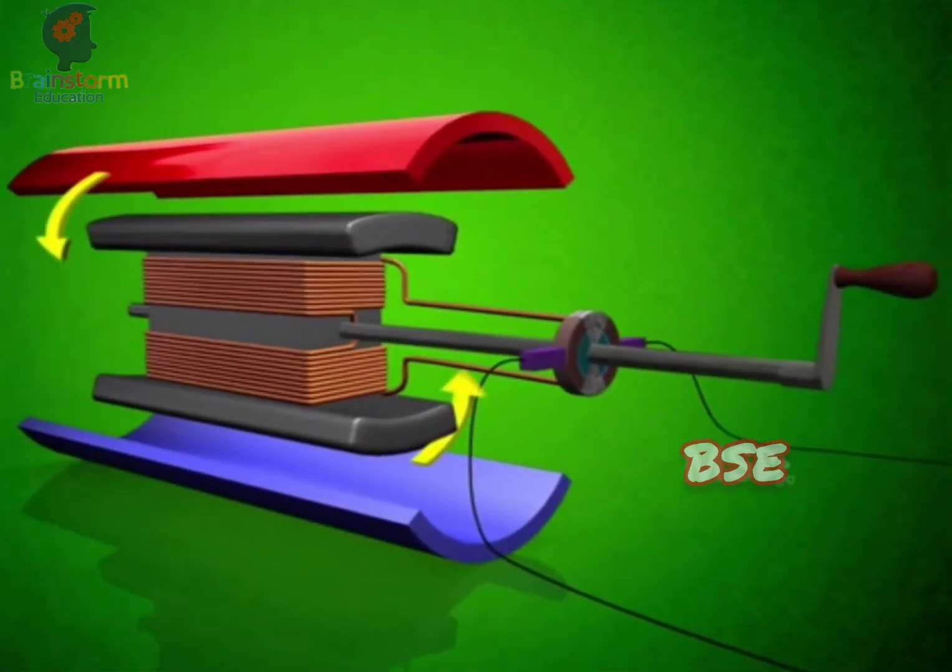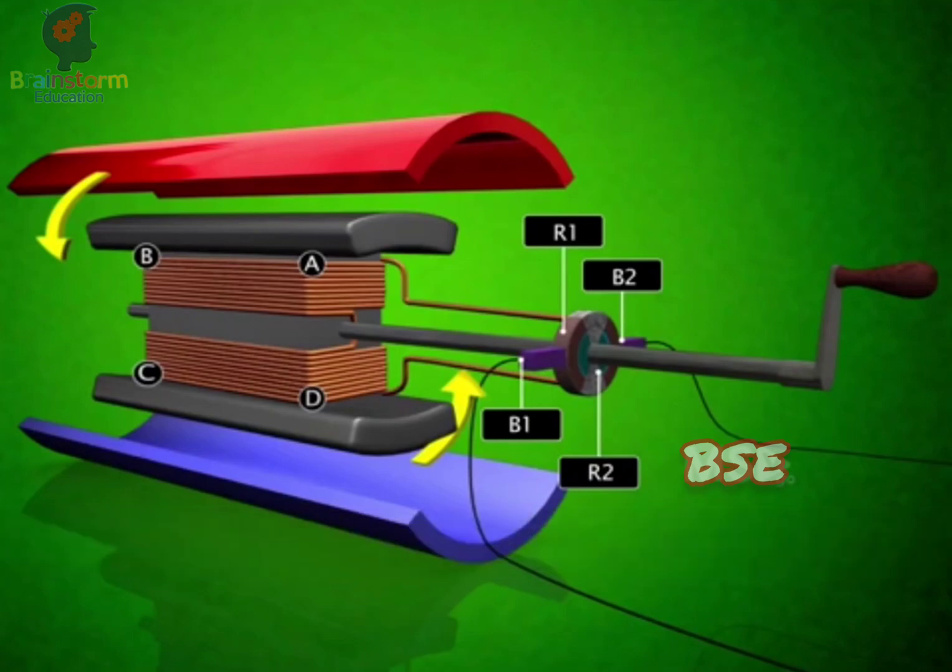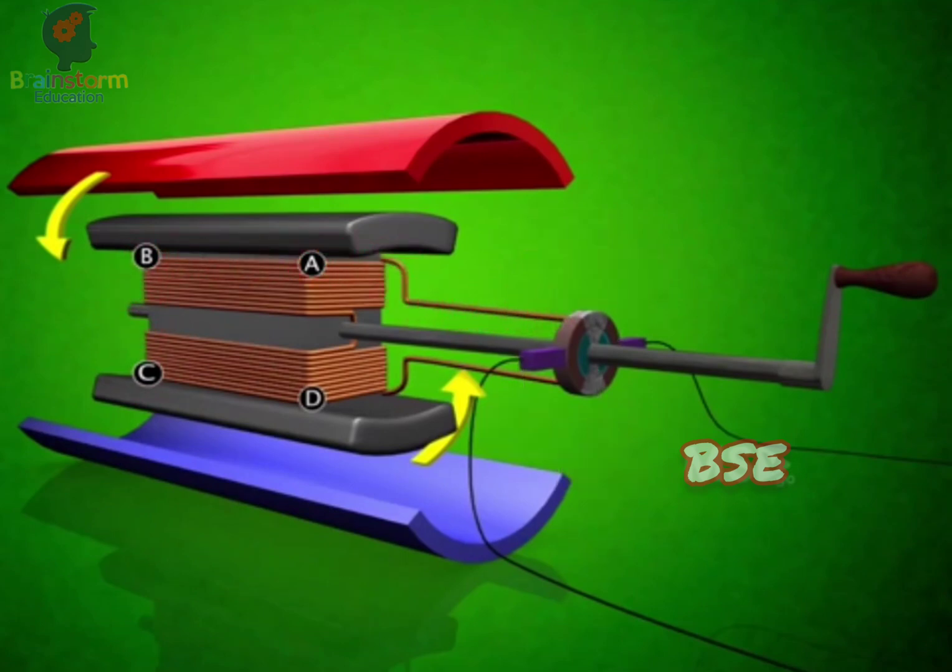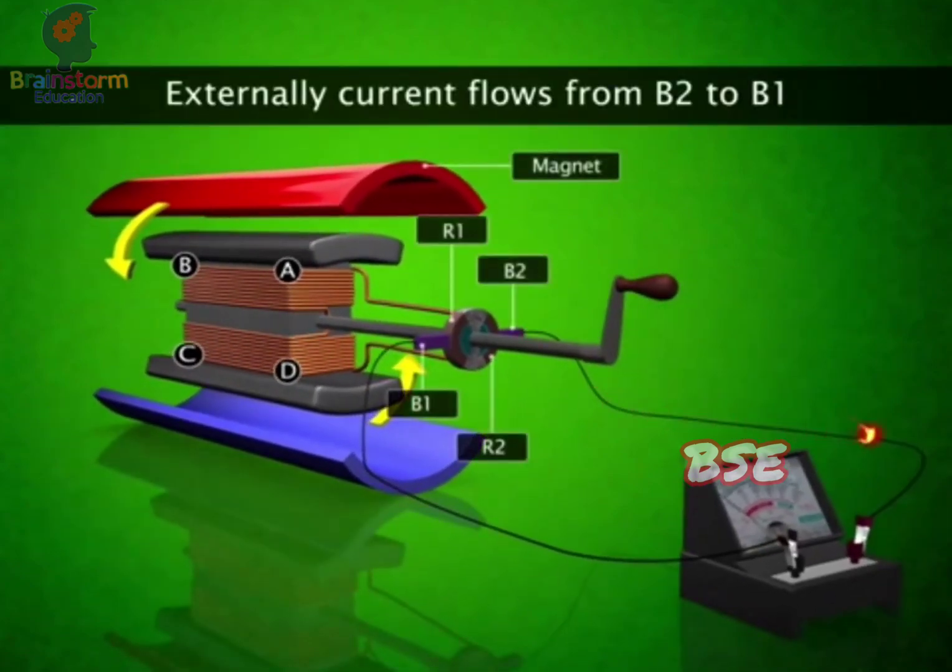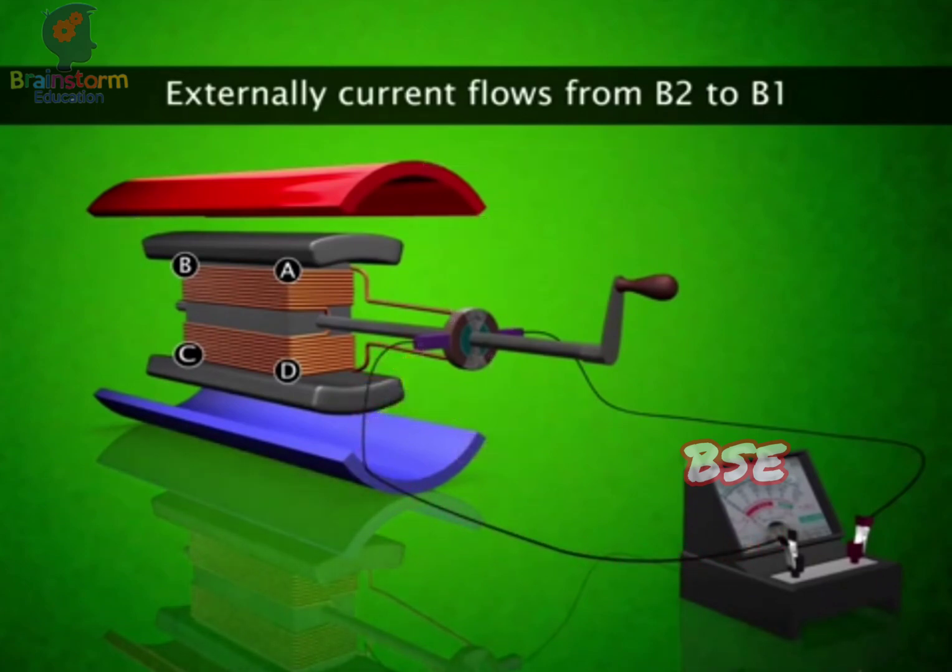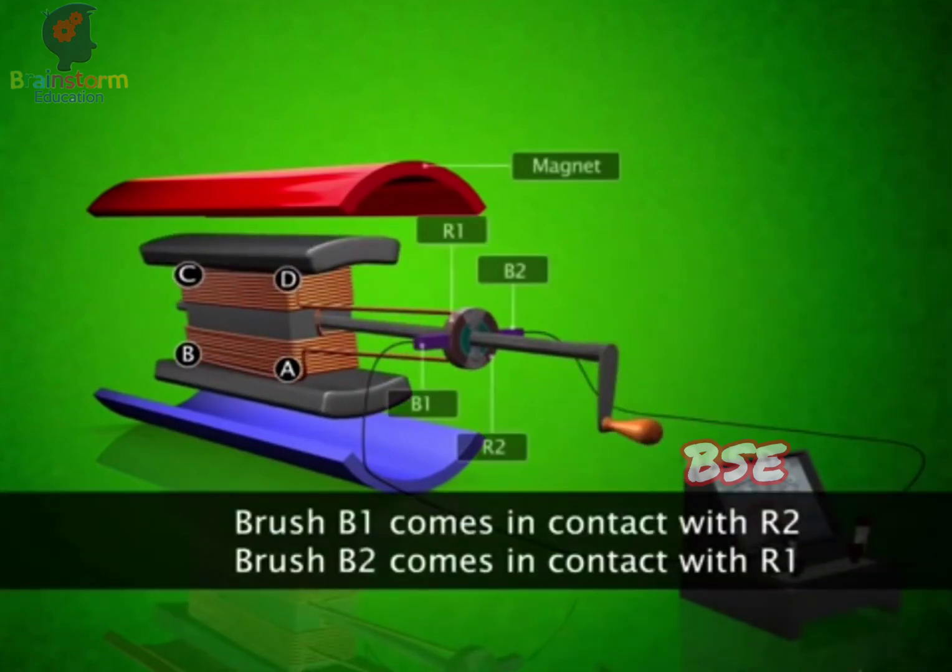When the coil rotates, arm AB will move downwards and arm CD will move upwards. The current will flow in the direction DCBA and onwards to R2. Externally, this current flows from B2 to B1 since R2 is in contact with B2. Now the coil takes a half a turn and brush B1 comes in contact with R2 and brush B2 comes in contact with R1 of the commutator.